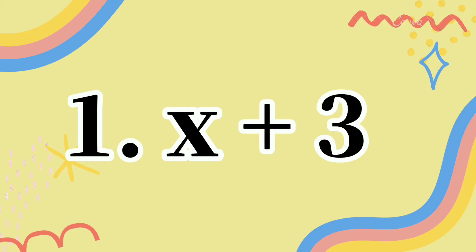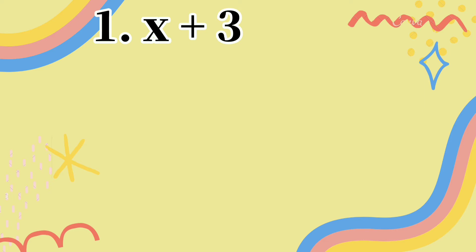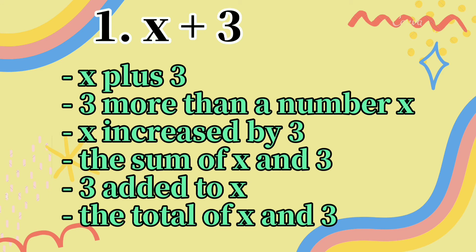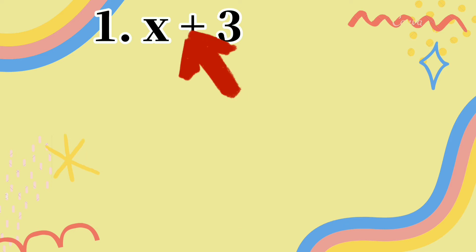Let's solve number 1. For number 1, we can translate it as: x plus 3, 3 more than a number x, x increased by 3, the sum of x and 3, 3 added to x, or the total of x and 3. Since the symbol is a plus sign, we use the keywords for addition.